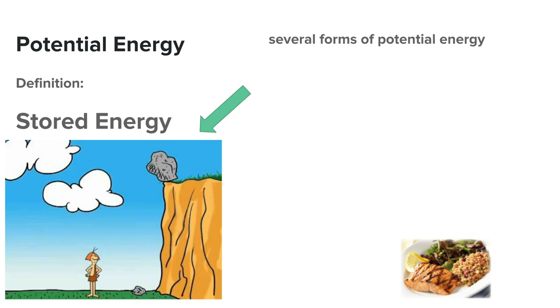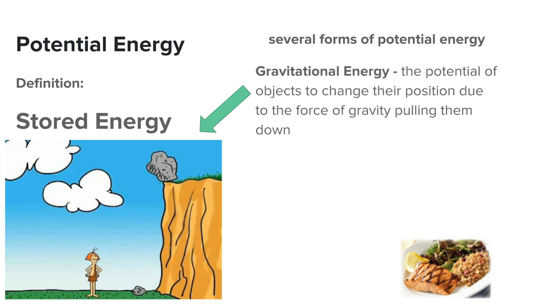The first kind that you see in the picture is gravitational energy. That's the potential of objects to move due to the force of gravity pulling them down. So if that rock were to be pushed just a little bit it would have a lot of gravitational energy because it's so heavy it would pull down due to the force of gravity.